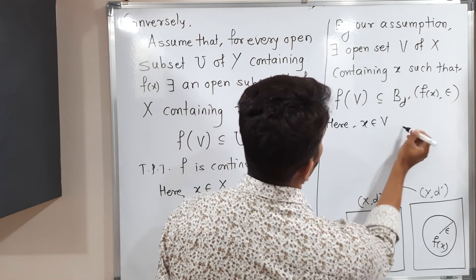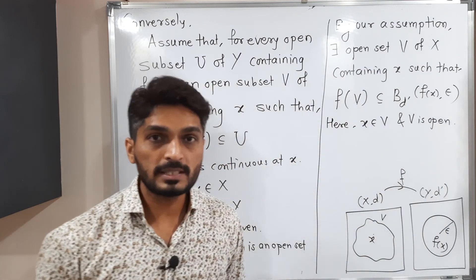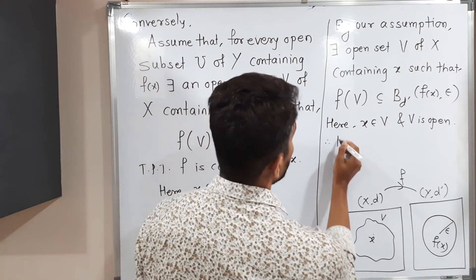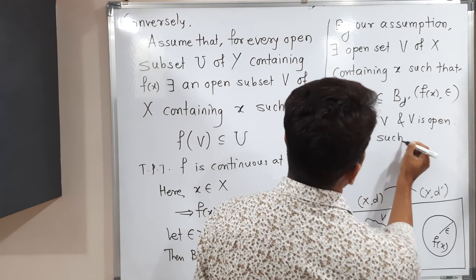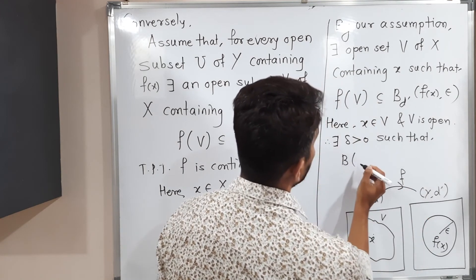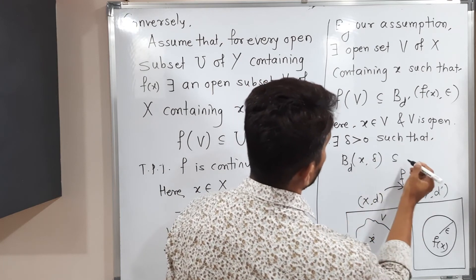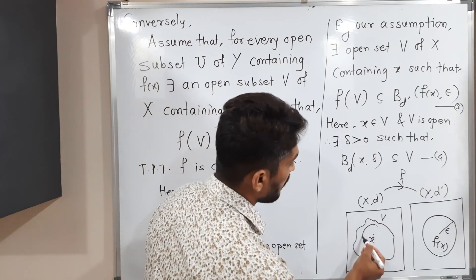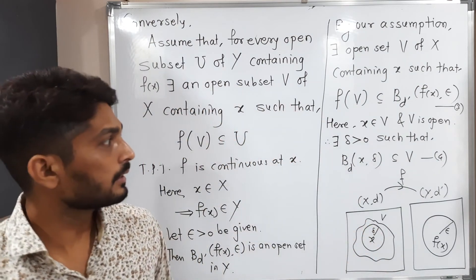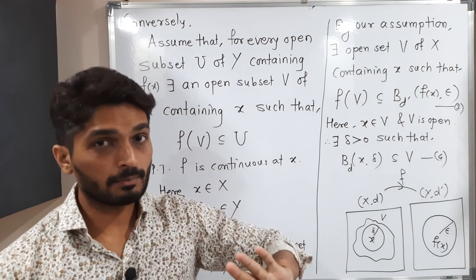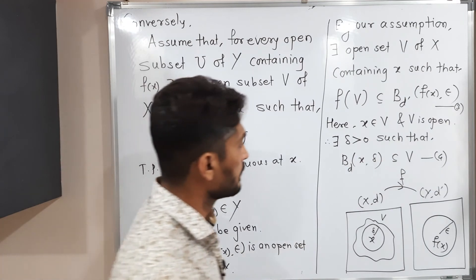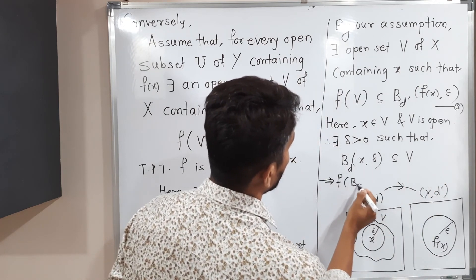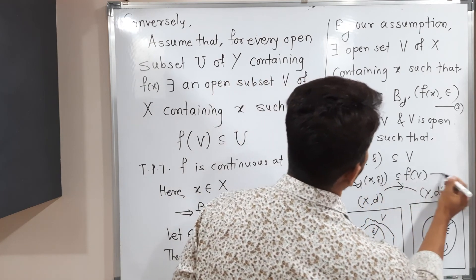Since x belongs to V and V is open, by the definition of open set there exists delta greater than 0 such that the open ball B(d, x, delta) ⊆ V. I call this statement (3). So we have a ball around x with radius delta that lies inside V. Since this ball is a subset of V, applying f to both sides gives f(B(d, x, delta)) ⊆ f(V). I call this statement (4).